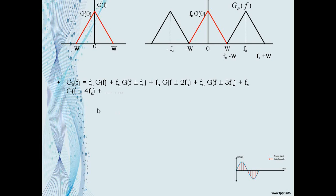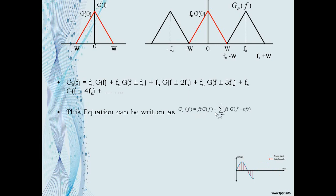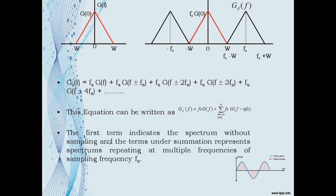We can rewrite the equation as G_δ(f) = Fs·G(f) + Σ (n ≠ 0) Fs·G(f − nFs). The first term indicates the spectrum without sampling, and the terms under summation represent spectra repeating at multiples of the sampling frequency Fs.